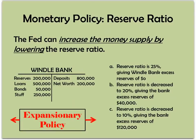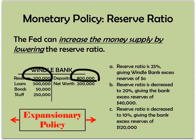Tool number two is the reserve ratio — the percentage of deposits a bank must keep in reserve. The Fed sets this ratio. If it wanted to increase the money supply, it could lower the ratio. For example, a bank with $800,000 in deposits and a 25% reserve ratio must hold $200,000 — exactly what they have, so no excess reserves, no loans, no money creation. If the Fed lowers the reserve ratio to 10%, that's only $80,000 required, leaving $120,000 in excess reserves. They can go out and lend money, which increases the money supply.